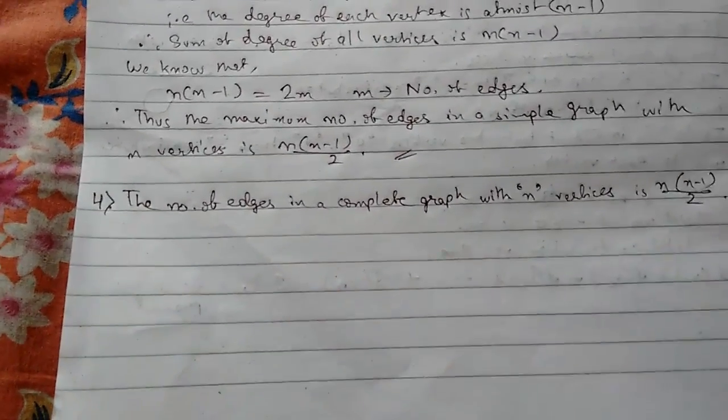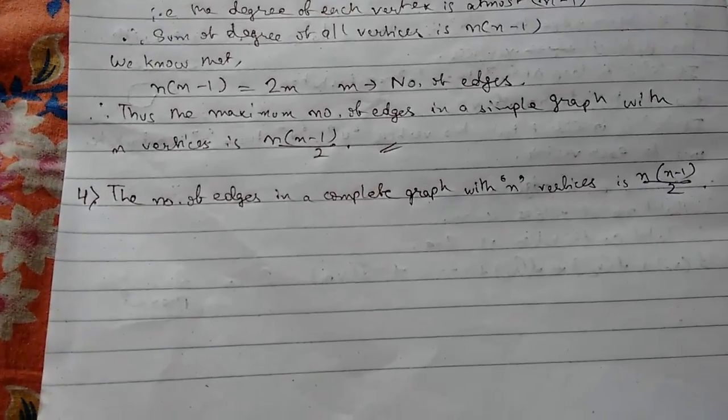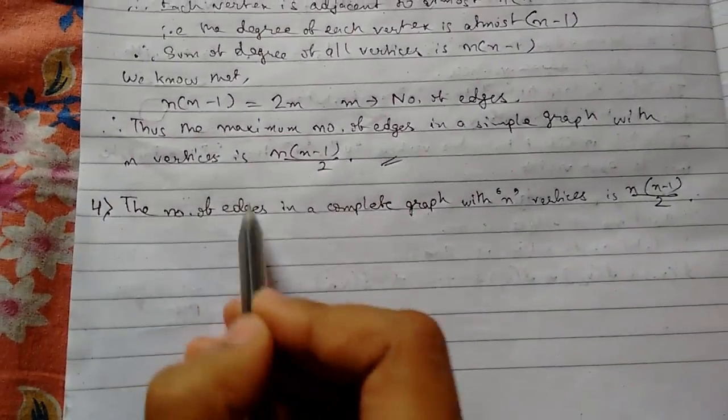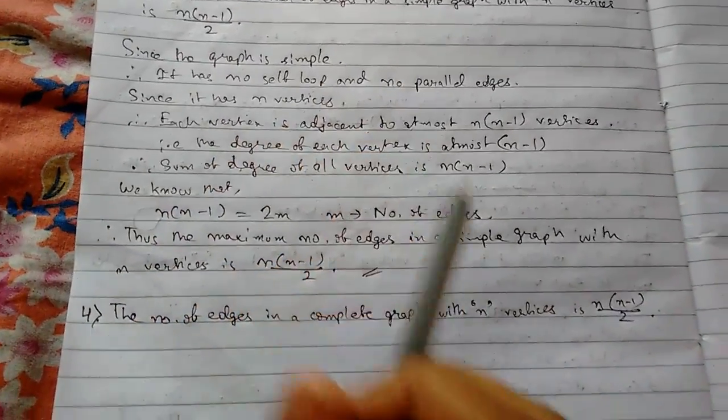The number of edges in a complete graph with n vertices is n into n minus 1 by 2. Here it is edges. Previously it was for simple graph.